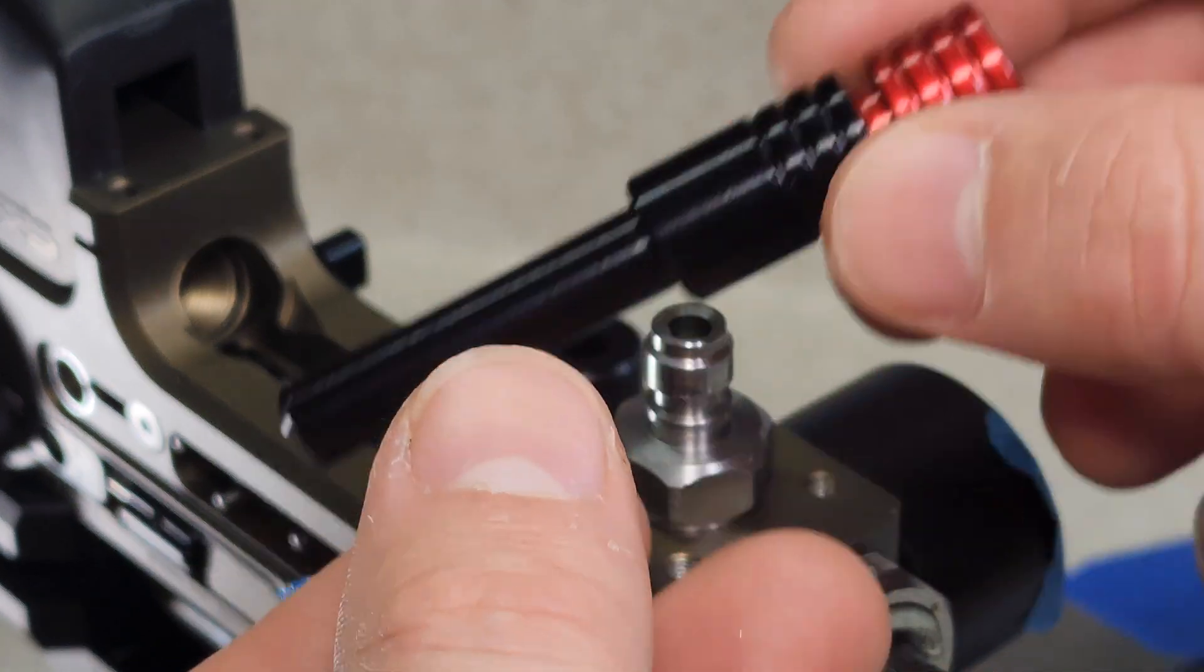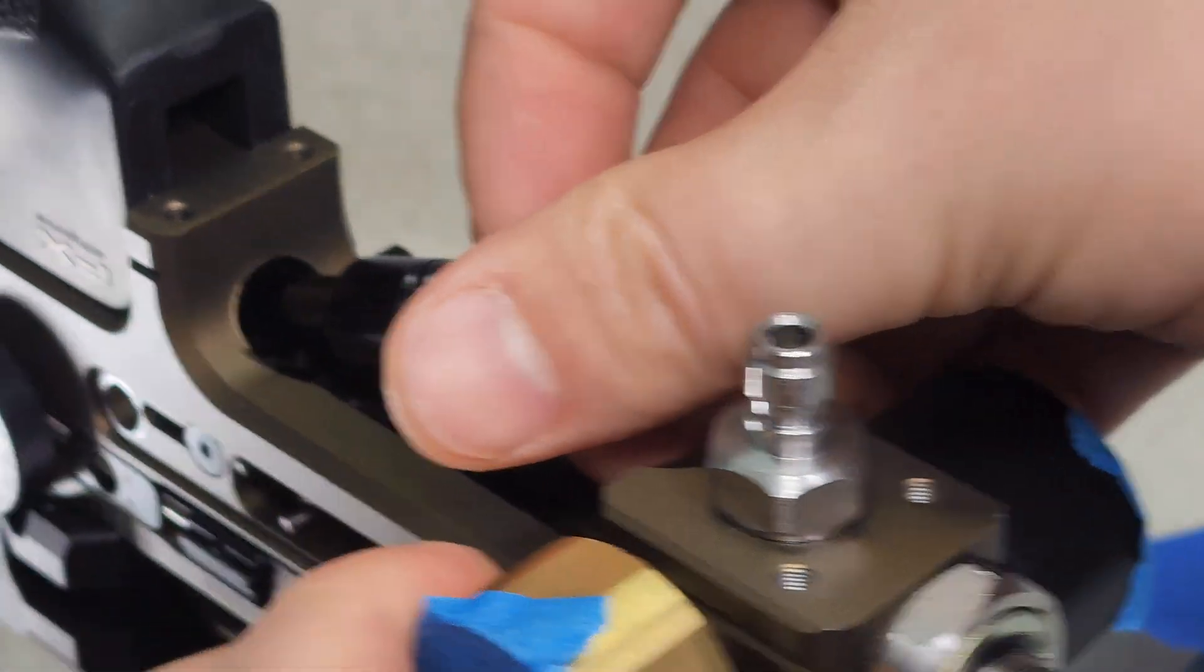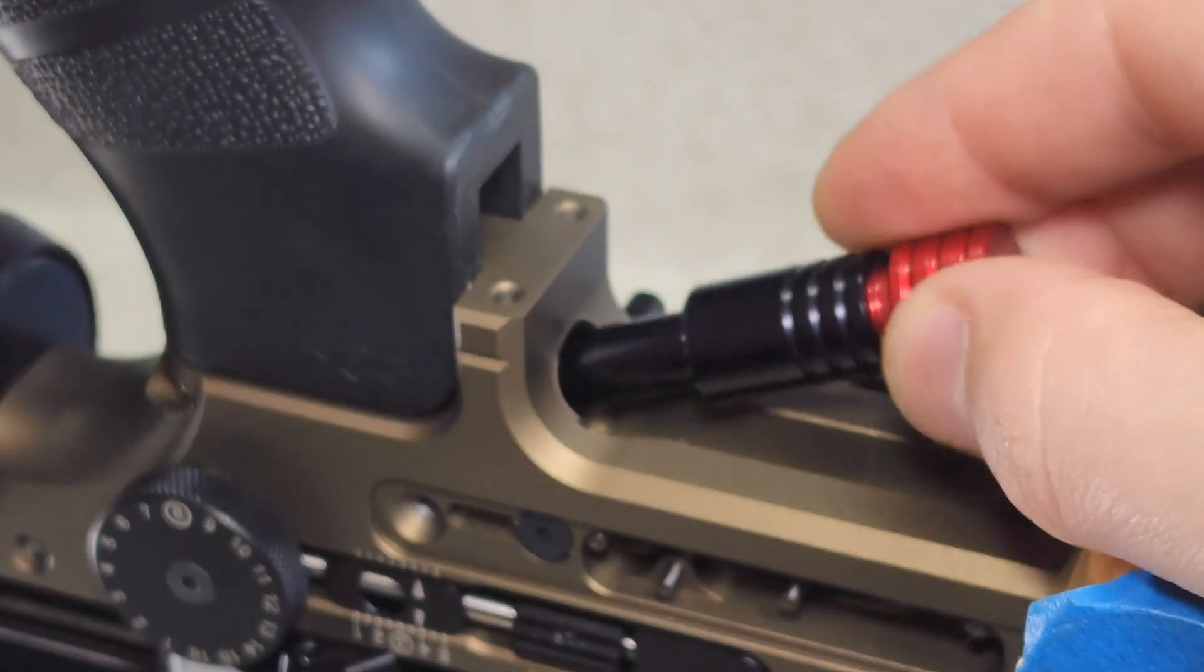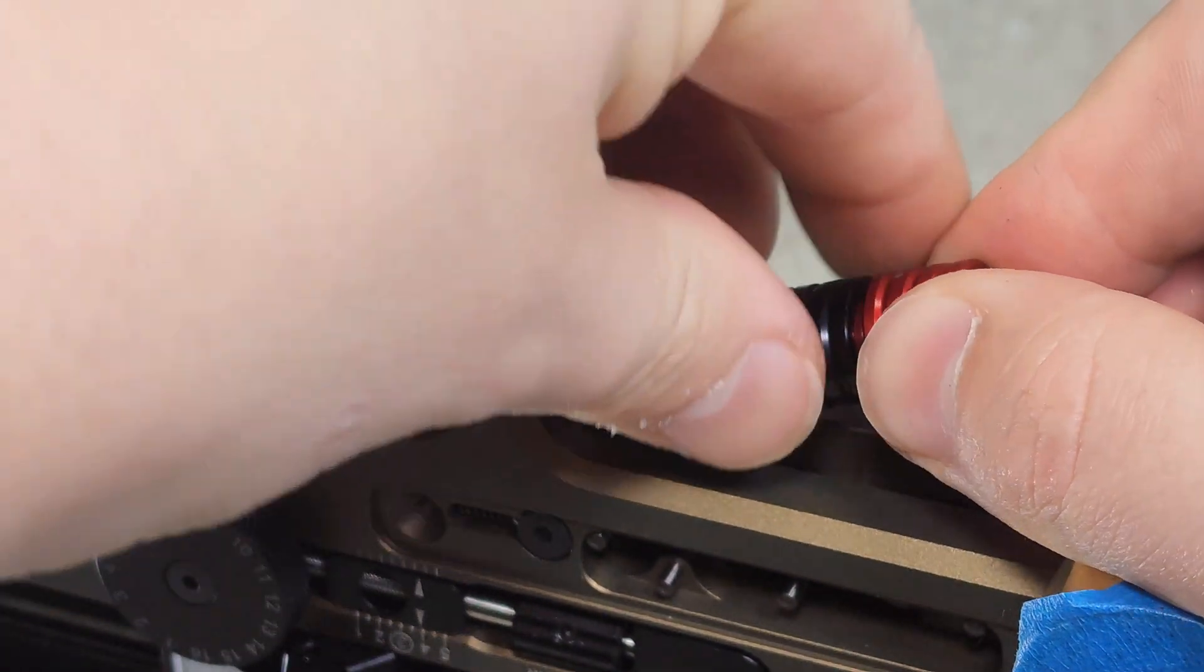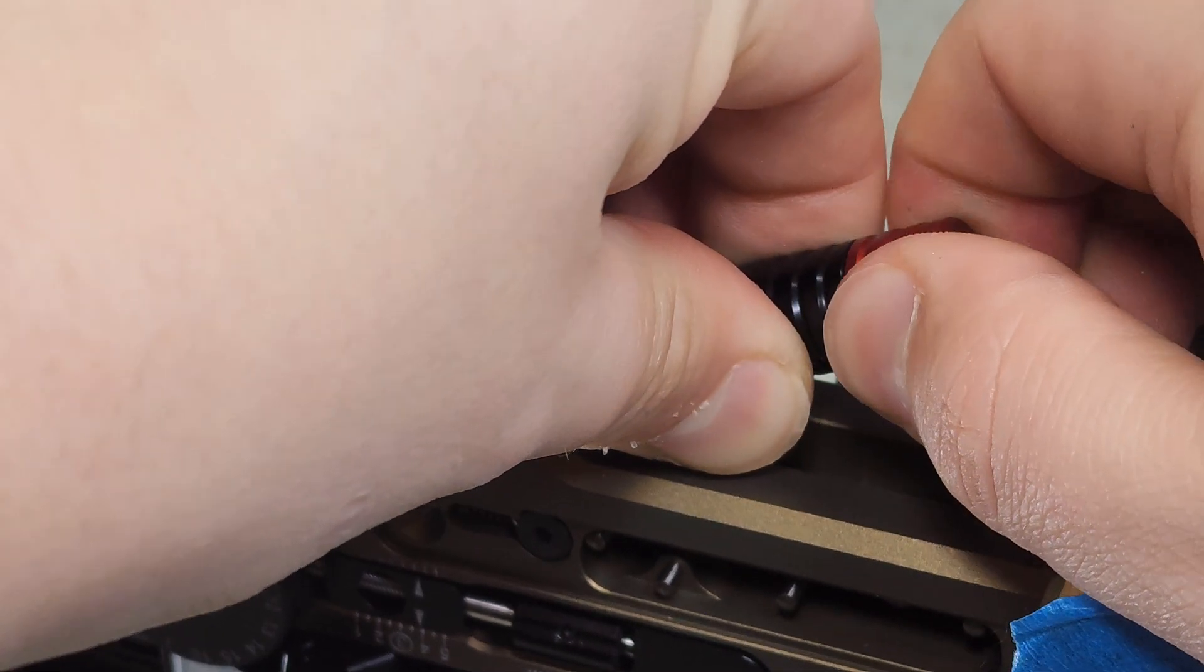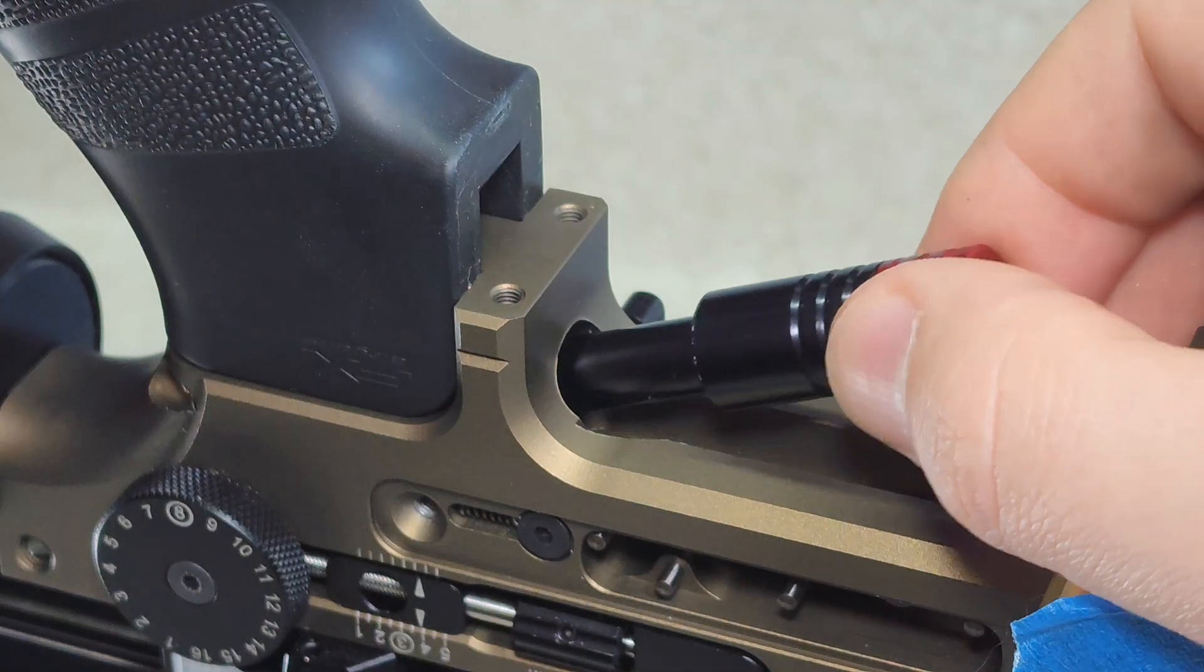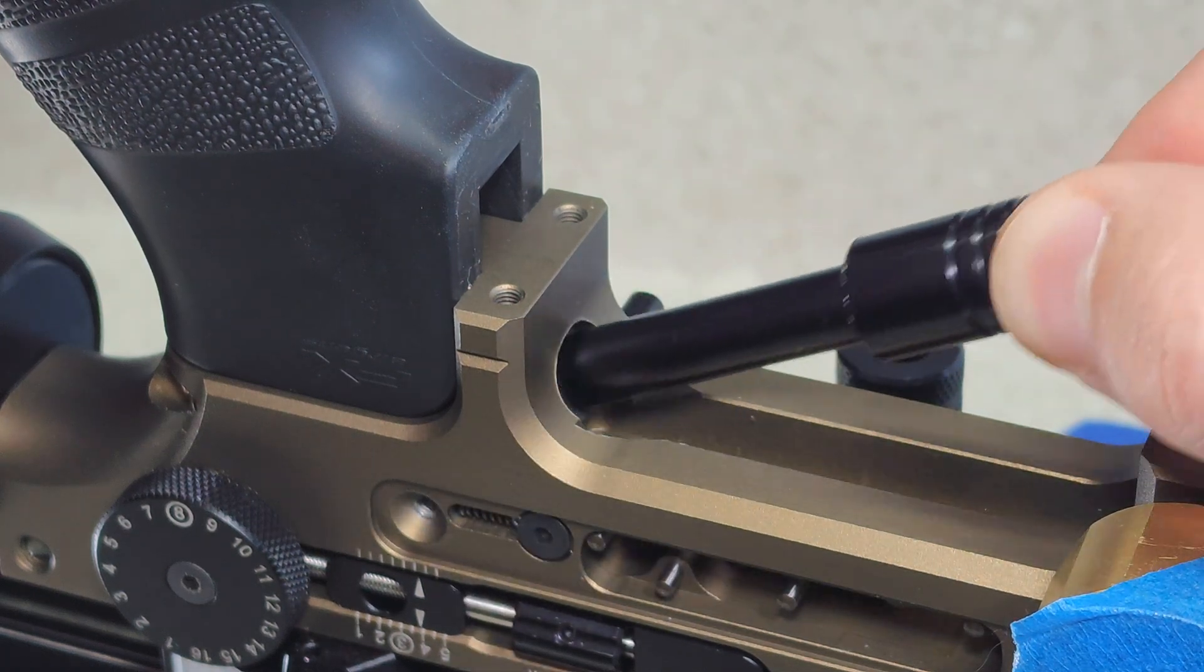And I come in with the regulator piston tool, try to do this at a little bit of an angle so you can see. The piston's in there, I tighten it down while holding this in place and there you go. And put it back in.